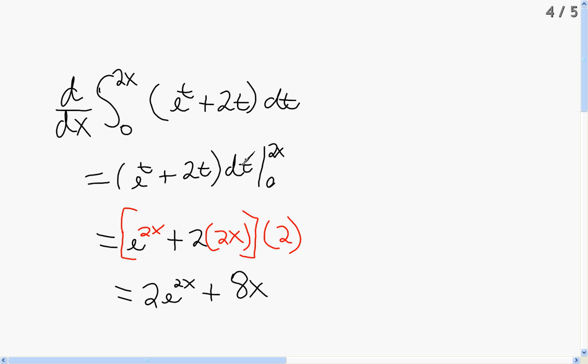And all of that times the derivative of the t that we're plugging in. We're letting 2x represent t, so the derivative of 2x is 2. Now somebody's asking, well what happened to us plugging in 0? Well if I plug in 0, yeah I'm gonna get e to the 0 plus 2 times 0, and that's gonna give me some number, but when I take the derivative of 0, 0 is a constant.